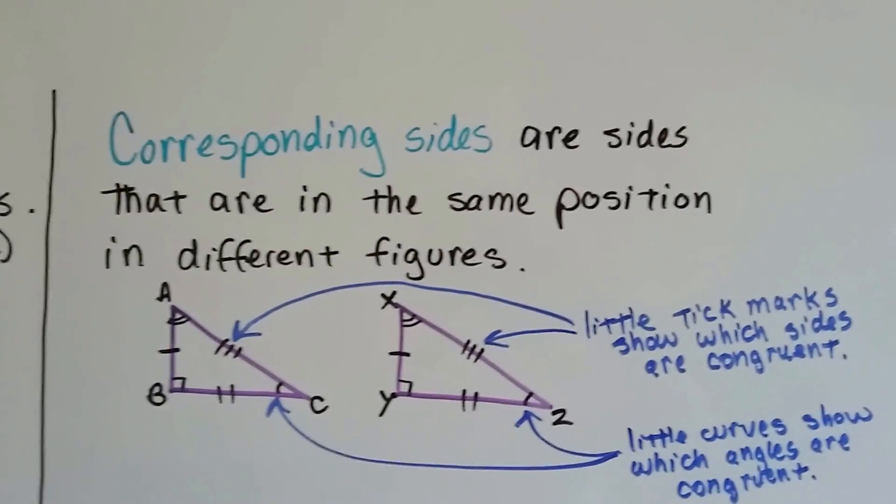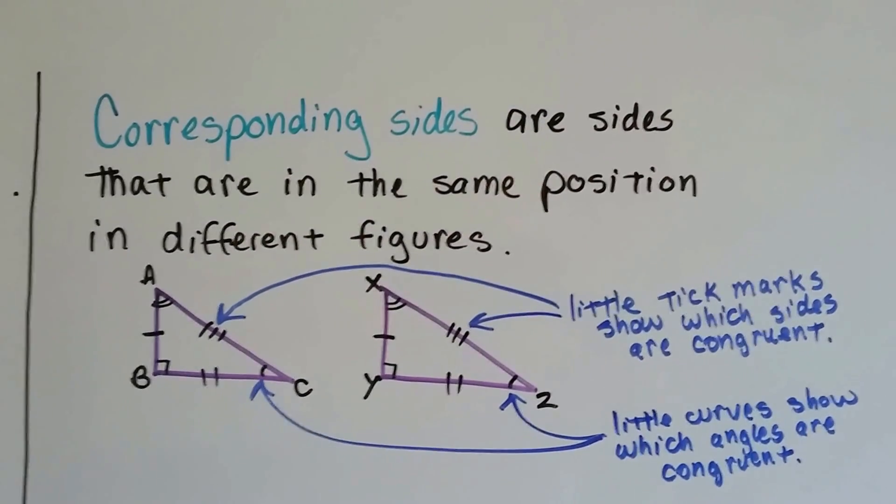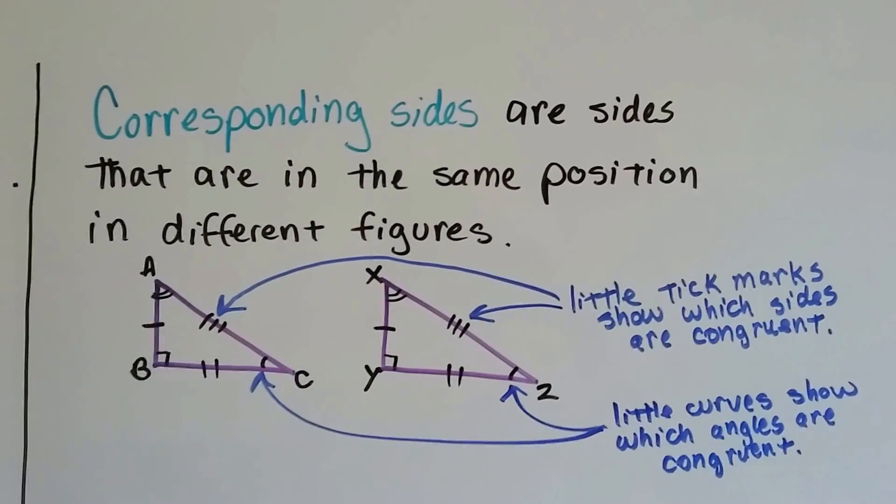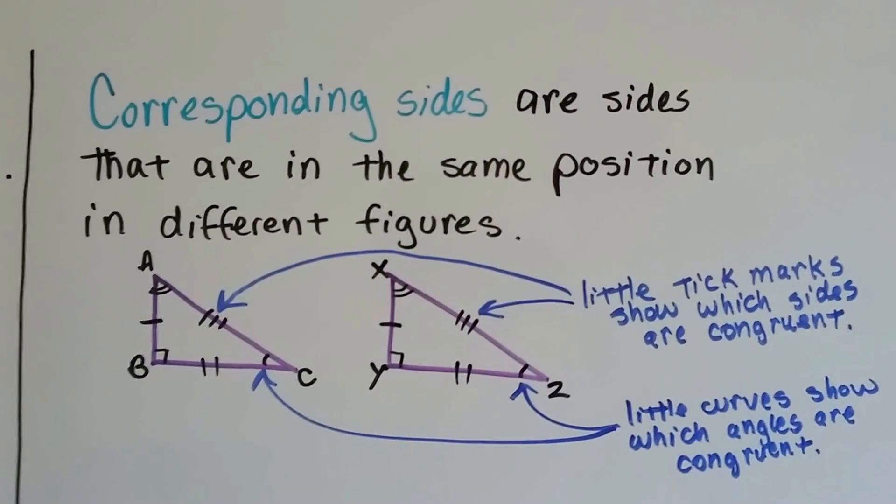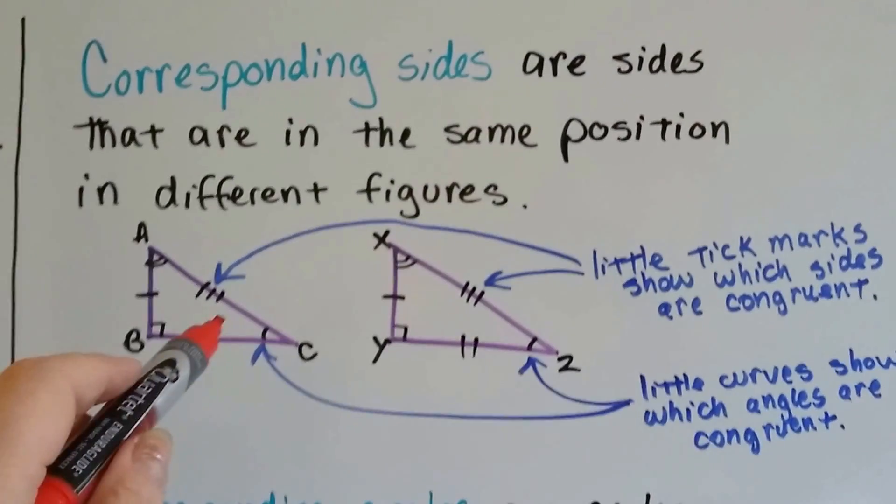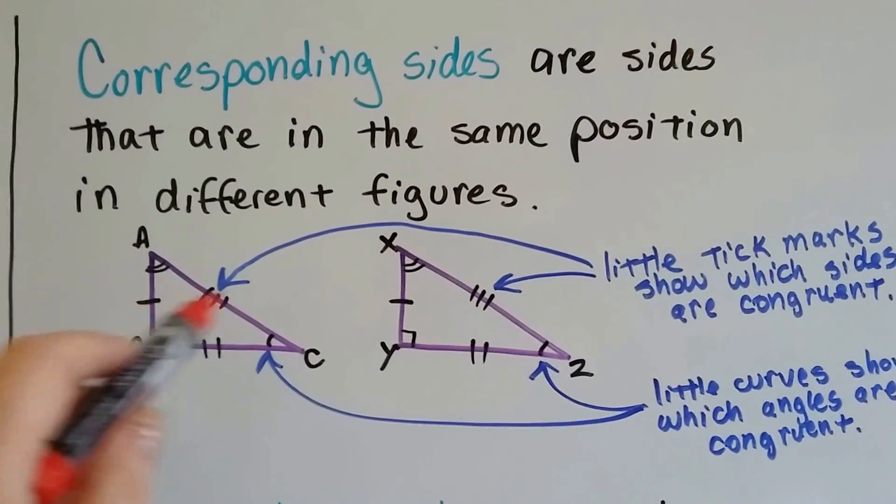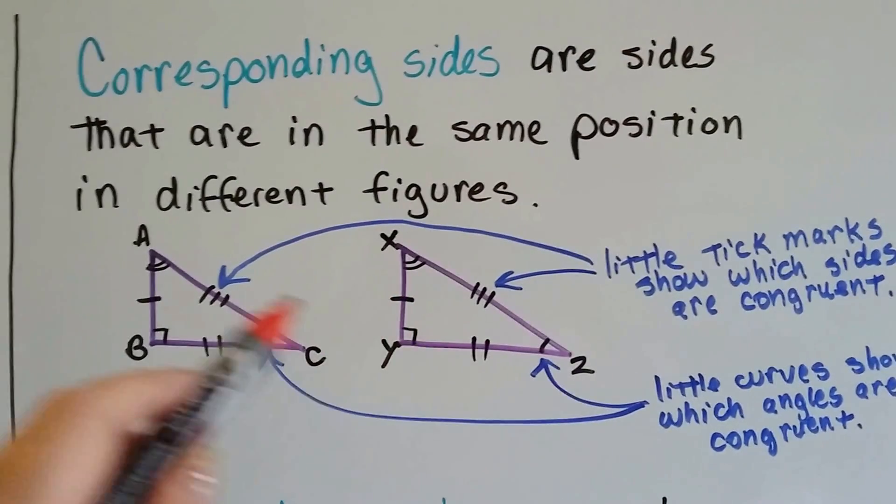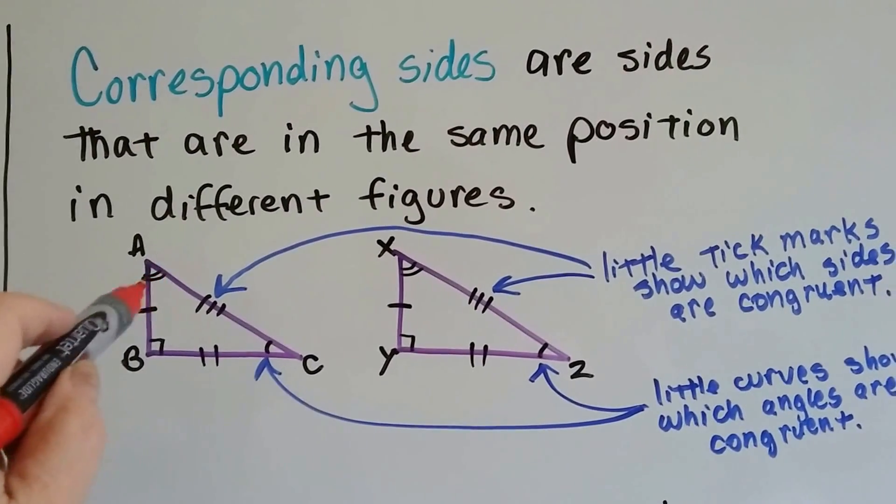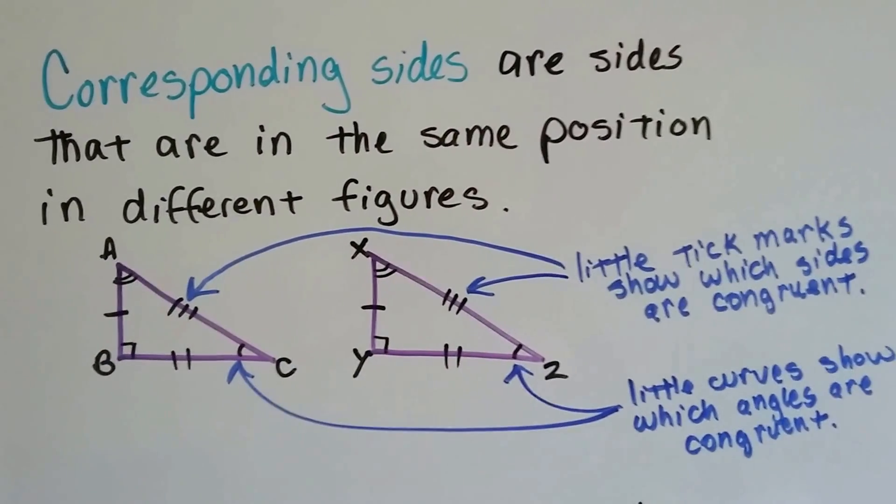So corresponding sides are sides that are in the same position in different figures. These little lines correspond to the lines in this triangle, and the little curves in the angles correspond to the curves in the angles in this one.